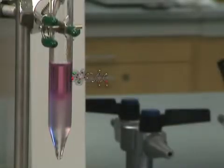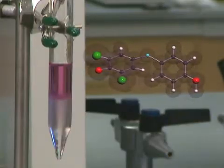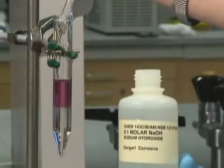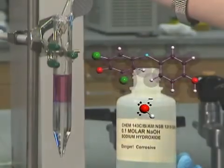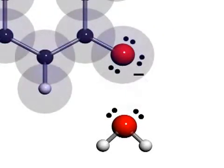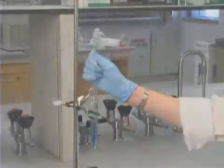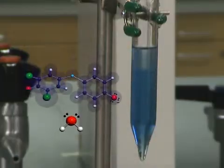You can move a compound between organic and aqueous layers by changing the protonation state. The top layer contains a pink indicator. Adding base removes a proton from the indicator. The deprotonated molecule is now blue and is soluble in the bottom aqueous layer.